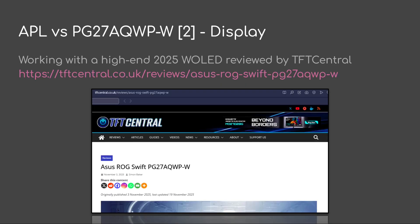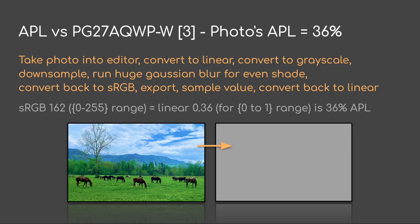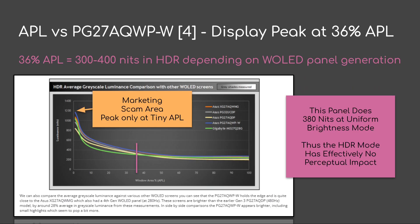Comparing APL to a real display — in this case a high-end 2025 W OLED as reviewed by TFT Central — we first need to figure out what this photo's APL is. So I take the photo into an editor, convert it into a linear space, convert it into grayscale, downsample it, run a huge Gaussian blur, convert it back to sRGB, export, and then sample the value and convert that value back into linear. Pretty convoluted process, but at the end we have an sRGB level of 162. Converting that into linear is 0.36, which is 36% APL.